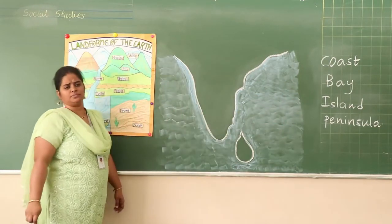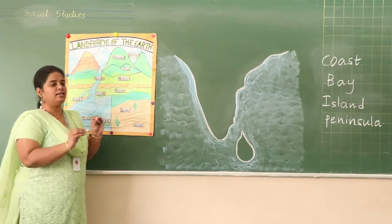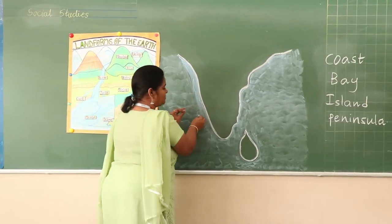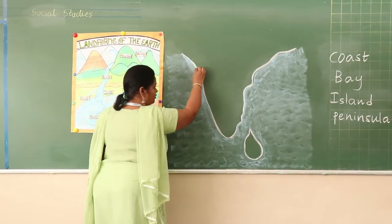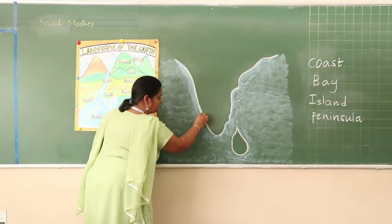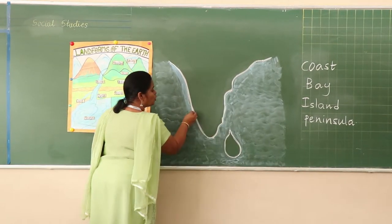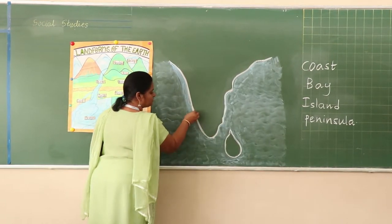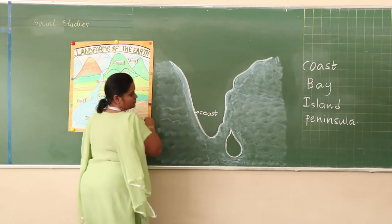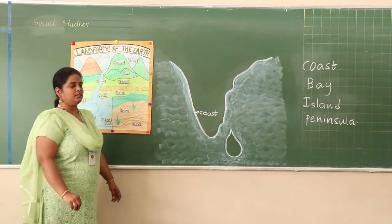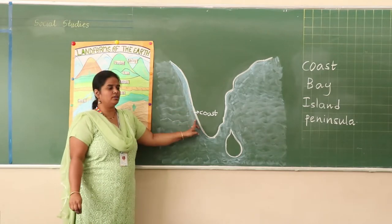What is a coast? Coast is nothing but when a land meets the sea. The land when it meets the sea is called a coast.